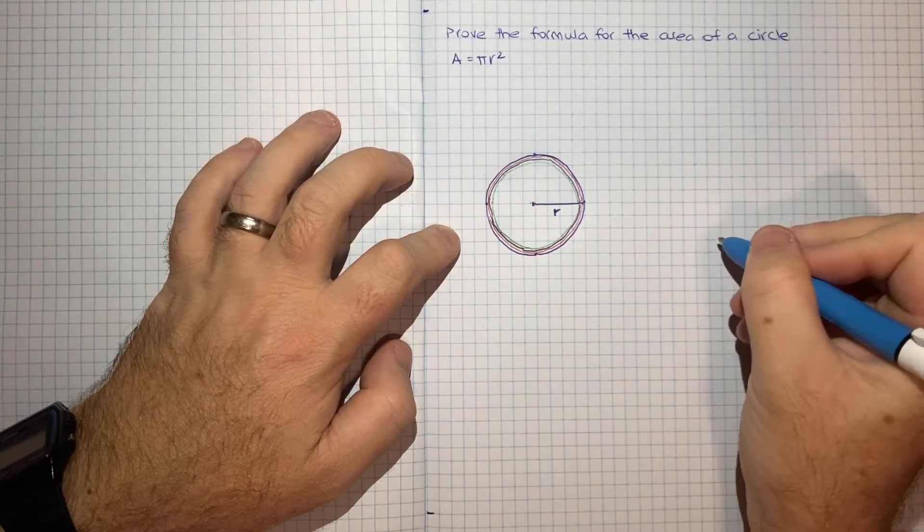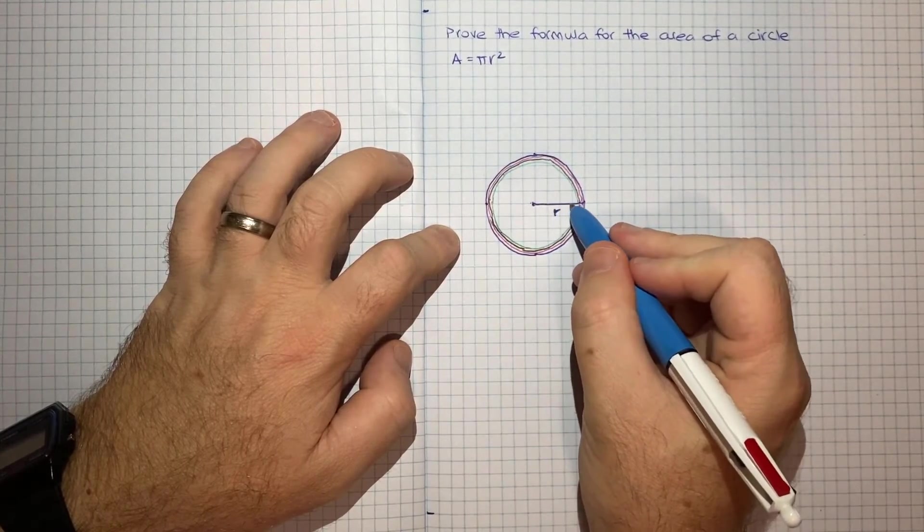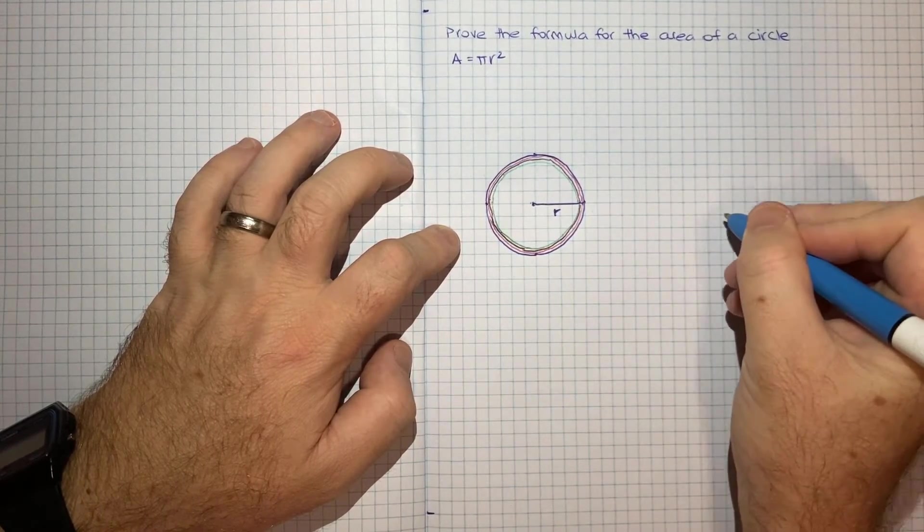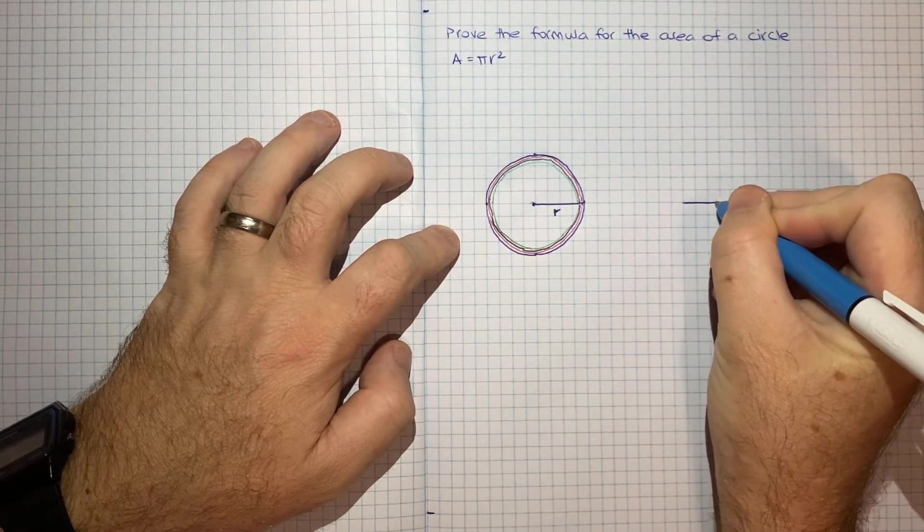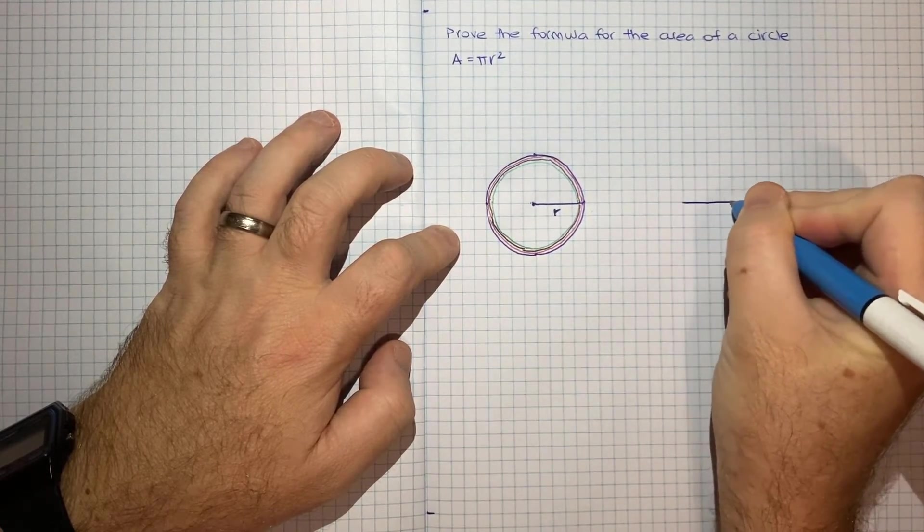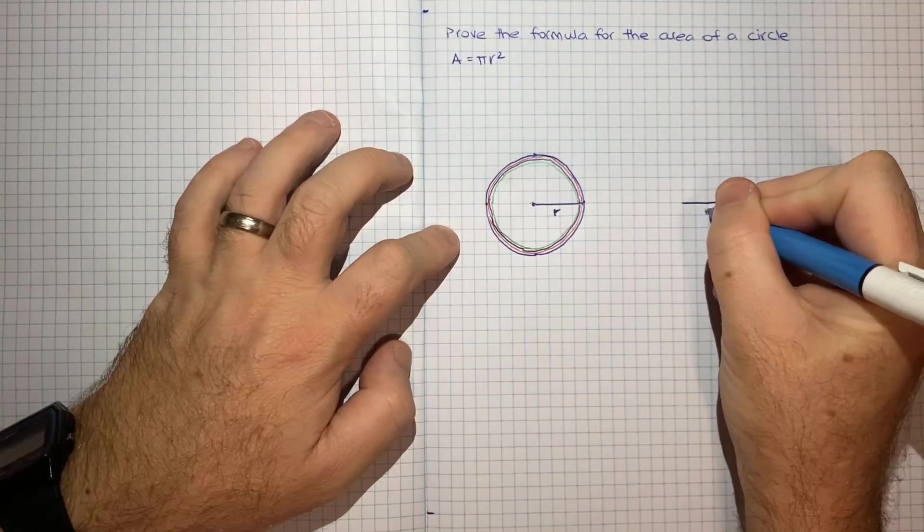So this won't be perfect, but if I just go one, two, three. So if I have a line here, one, two, three, four. So the same length as the radius of the circle. So it will have a length r.